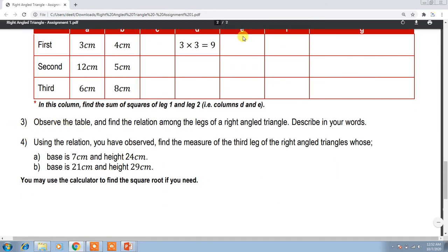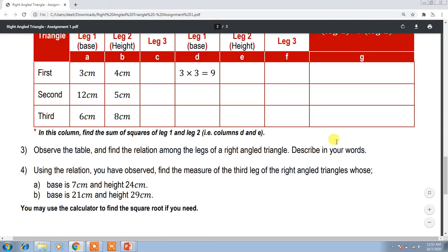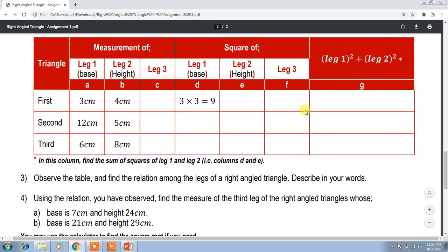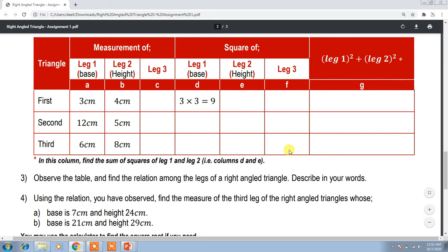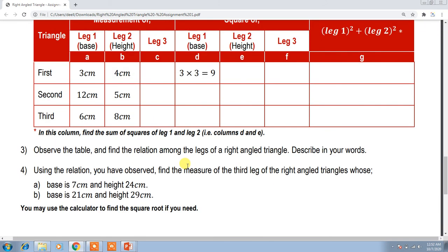The third question says: observe the table — find the relation among the legs of the right-angled triangle and describe it in your words. As a hint: look at all the values and see if any two columns have the same values. If values appear the same, you can easily identify that there is some relationship between the three legs of the triangle. Observe which two columns are the same after filling the table — they will always be the same across all three triangles.